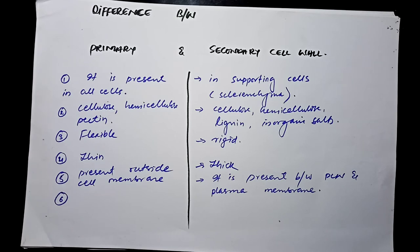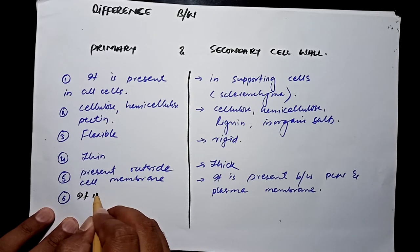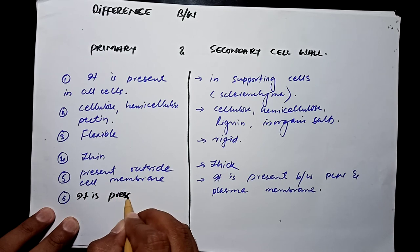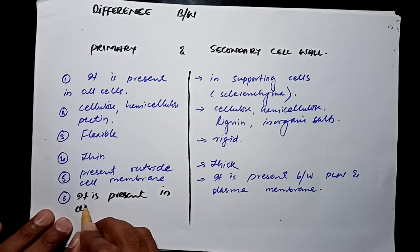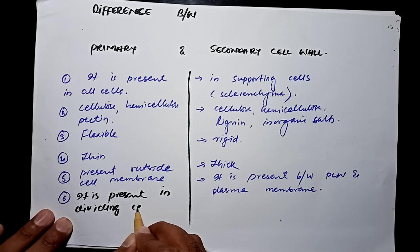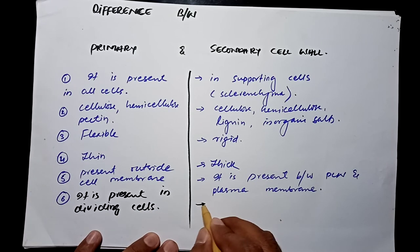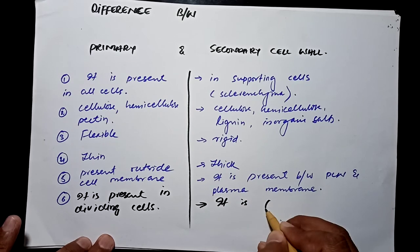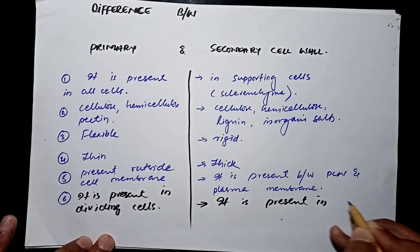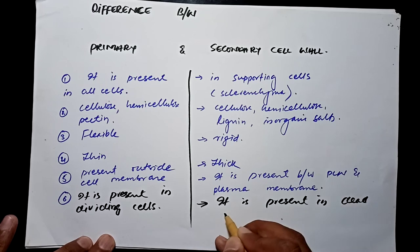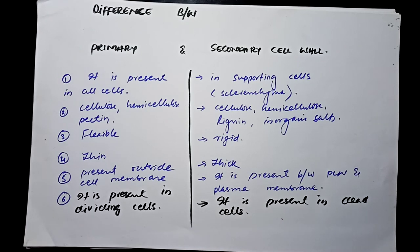Number six: primary cell wall is present in dividing cells while secondary is present in dead cells. So these are the differences between primary and secondary cell wall.